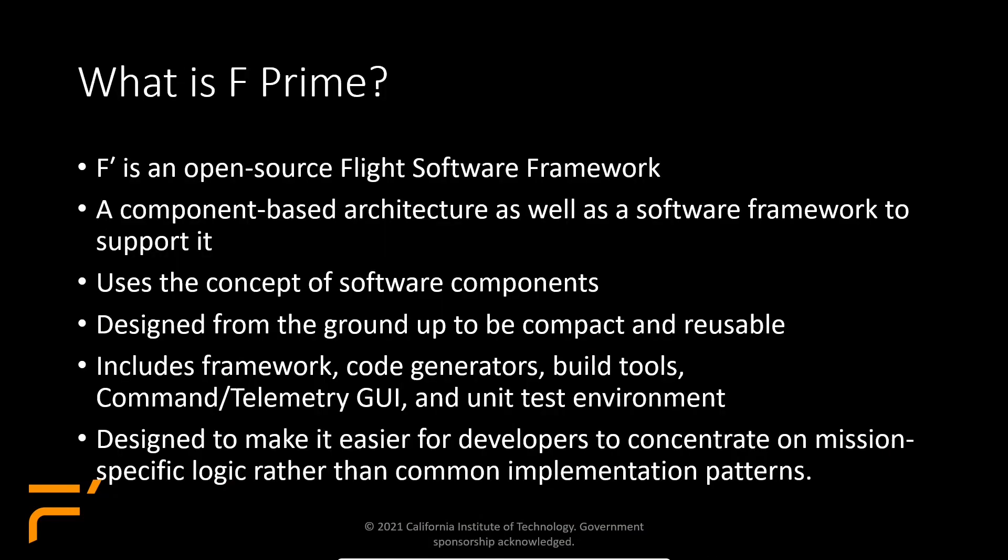So what is F'? F' is an open source flight software framework targeted for instruments, CubeSats, and smaller platforms. It is currently baselined for the JPL Sphinx Leon 3 avionics system on a chip. F' is a component-based architecture as well as a software framework to support that architecture. It's designed from the ground up to be compact and reusable. It includes the framework, code generators, build tools, a GDS, and a unit test environment, making it easier for developers to concentrate on mission-specific development rather than re-implementing common patterns.